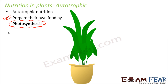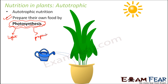Let us just try to break this word. Photo means light, synthesis means to synthesize something, that means to prepare something. So preparing food in presence of sunlight, and it also needs water with some other raw materials. But sunlight has to be present, and this process of preparing food is called photosynthesis.